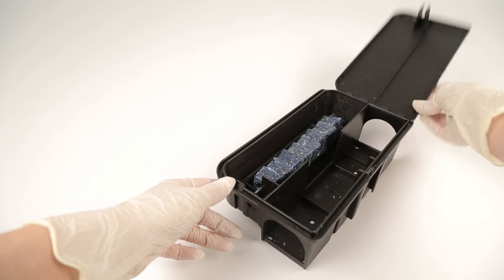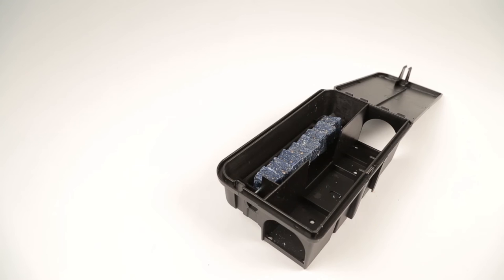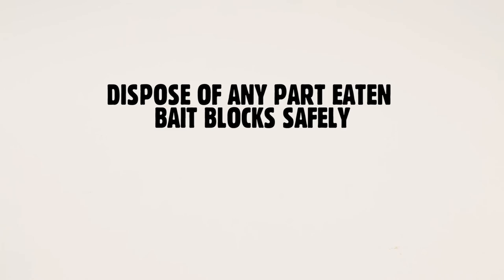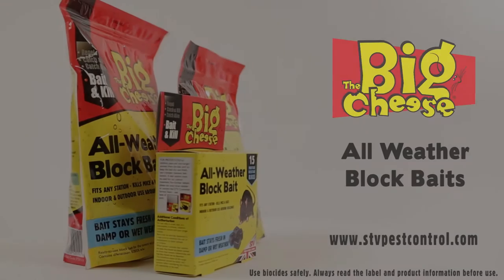Make frequent inspections and replenish the bait as required. Remove the bait station completely and dispose of any part-eaten bait blocks safely once rodents have stopped eating the all weather bait blocks.